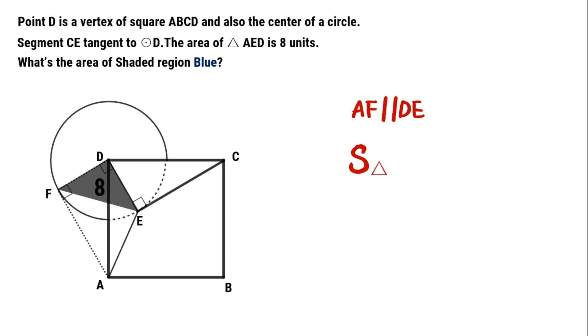Area of triangle AFD equals area of triangle AED. We can get the equation DE times DF over 2 equals 8. Meanwhile, DE equals DF. We can calculate that DE equals 4 units.